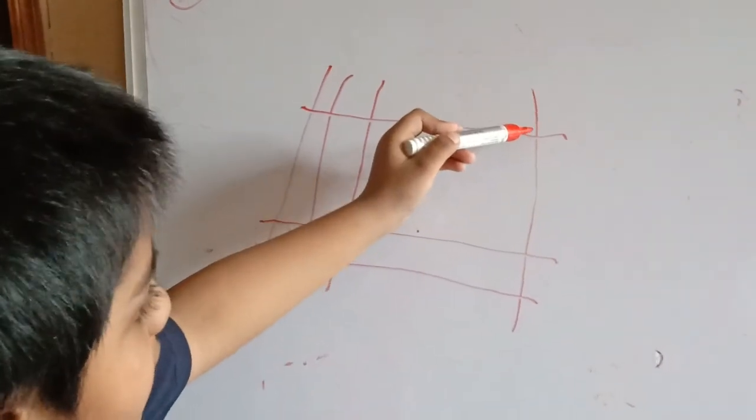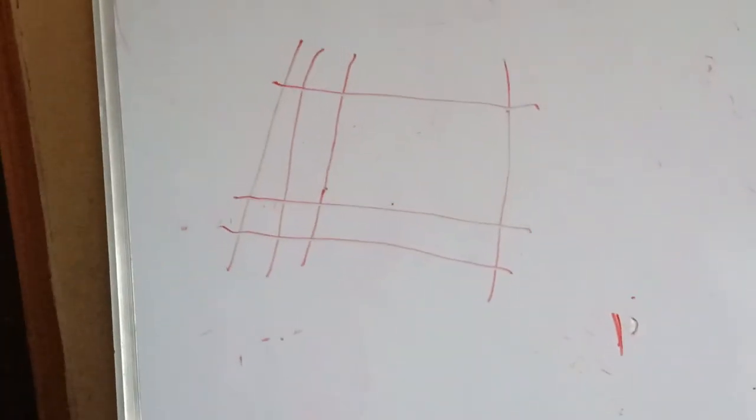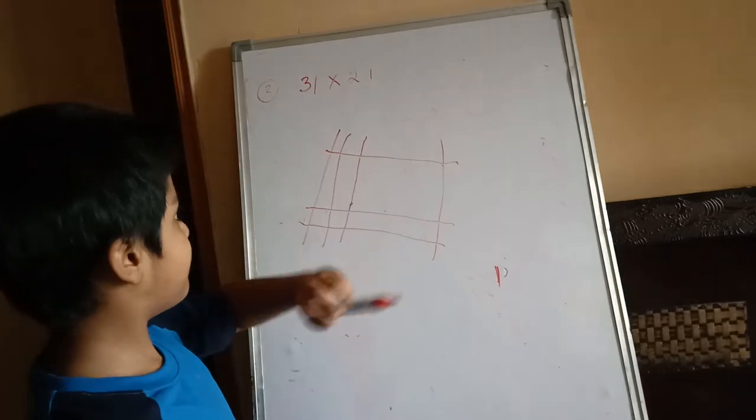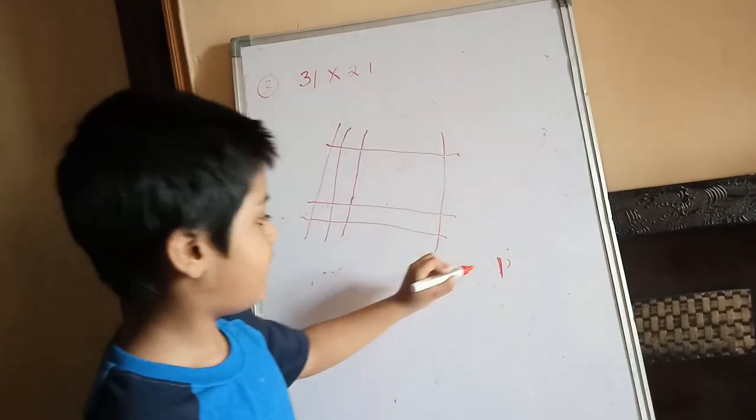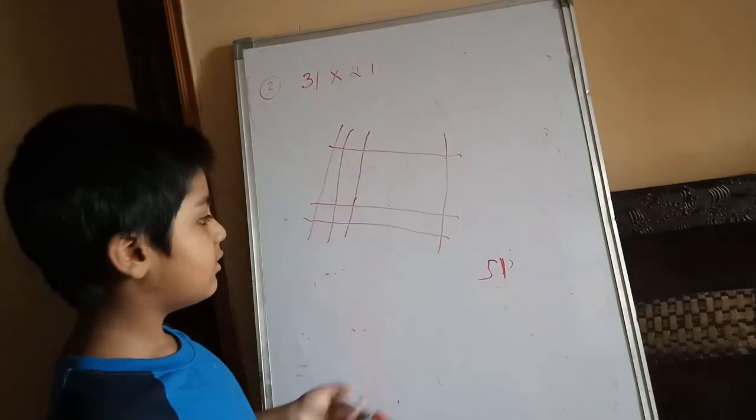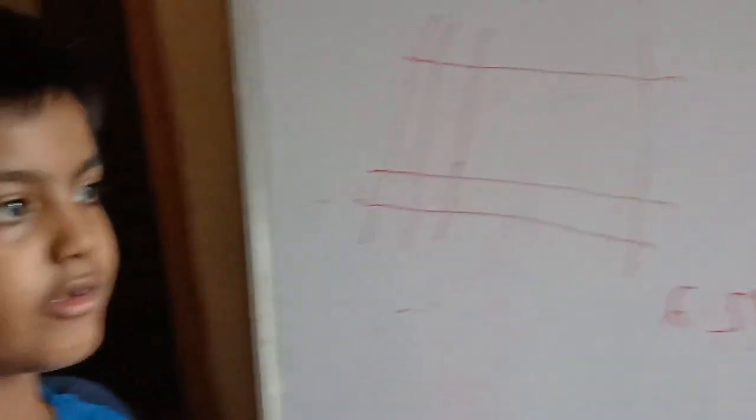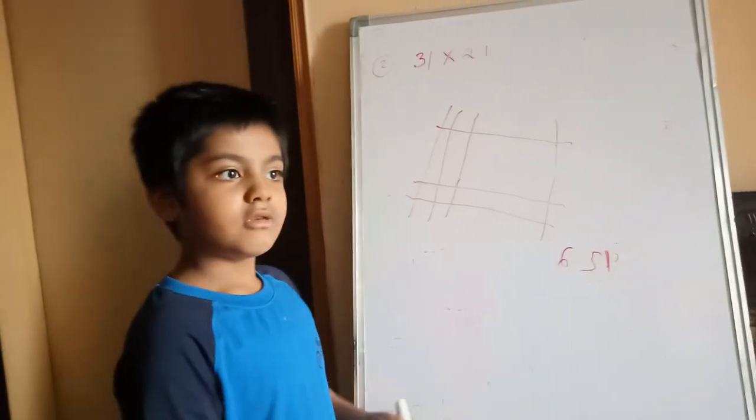You see, this is 1, taking down 1. The next one is 2 multiplied by 3, which is 5. And then last number is 6. So see, it's very easy. I think you can already do this. So bye guys.